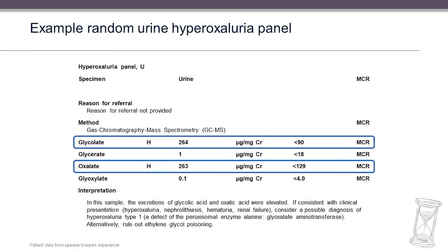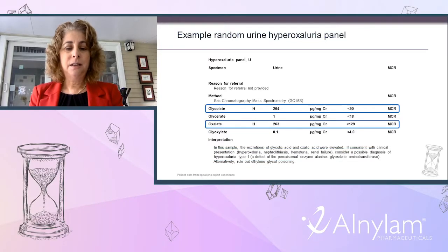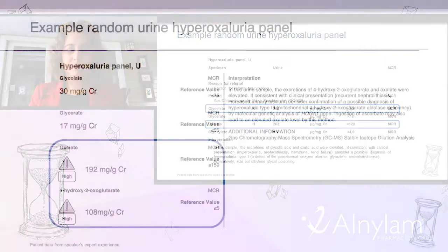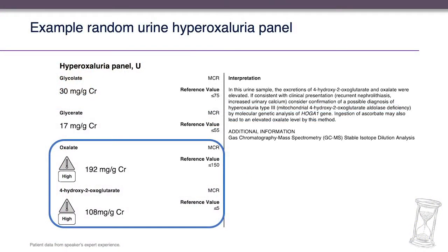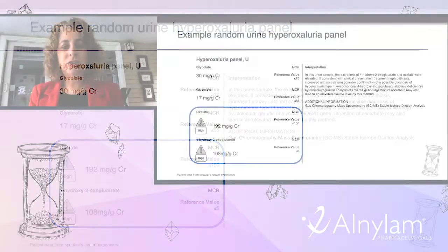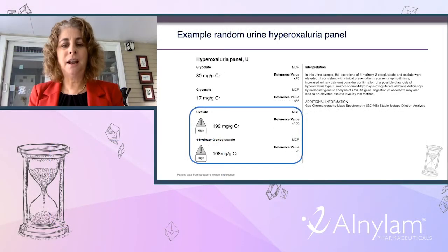Here is an example of a random urine hyperoxaluria panel where glycolate and oxalate are both elevated, consistent with primary hyperoxaluria type 1 and the AGXT gene mutation. A second panel example shows elevation in oxalate and HOG, which would lead you to consider analysis of the HOGA1 gene and a diagnosis of primary hyperoxaluria type 3.